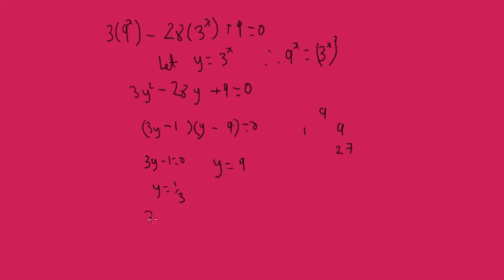But y is 3 to the power of x equals a third, or 3 to the power of x equals 9. So that means x must be minus 1, because 3 to the power of minus 1 equals a third. And here we've got 3 to the power of x equals 9. What do we raise 3 by to get 9? x must be 2, because 3 squared is 9. So these are the two solutions to this equation.